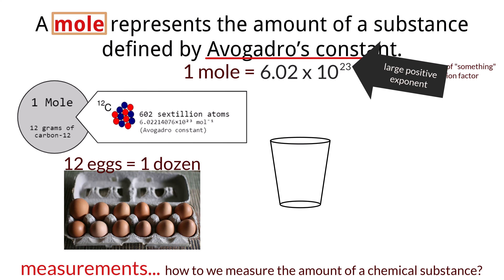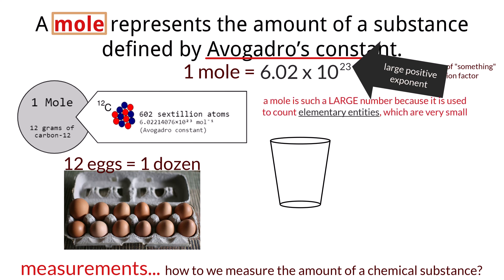A mole is a large number by design, as it needs to efficiently count substances that we call elementary entities, which are atoms, molecules, ions, electrons, or any other very small group of particles. Avogadro's number is a defined value of 6.02 times 10 to the 23rd particles, which is 602 sextillion particles, and that equals 1 mole.